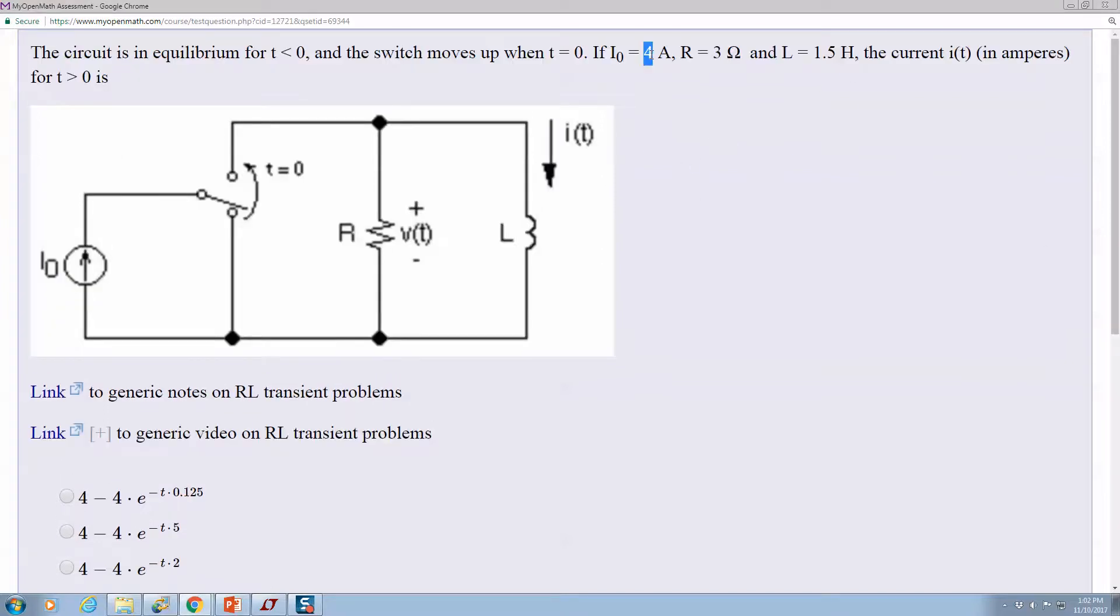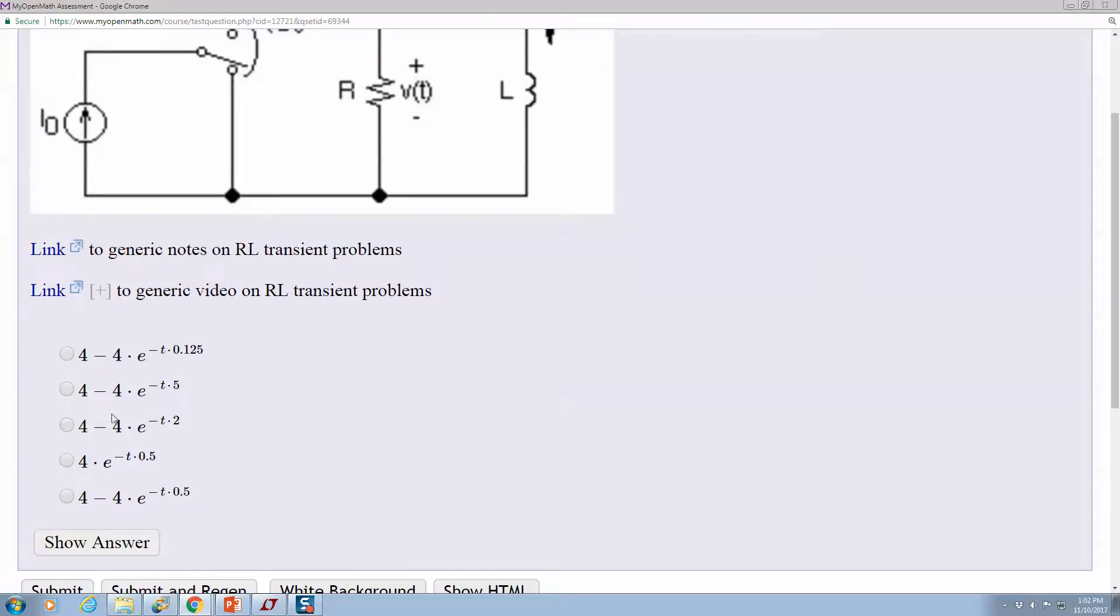If we look at the problem, we have 4 amps, so you have exponential approach. At time equals zero, four minus four to the zero is zero, so that one could be this one. This is exponential decay, so it can't be it - it starts high and ends up at zero.